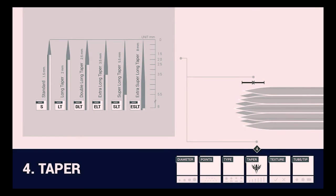A needle's taper is the length from the end of the needle bar to the sharp tip of the needle. The standard and shortest taper is 1.5 mil, and the longest taper, which we will call our extra super long taper, is 8 mil. The taper of a needle can be identified under taper in the fourth box on the needle ID label.